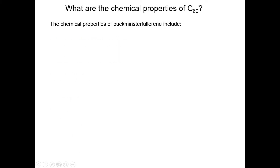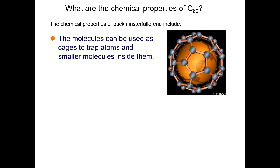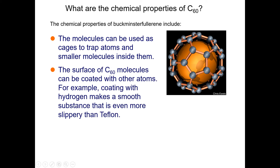The chemical properties of Buckminsterfullerene include that the molecules can be used as cages to trap atoms and smaller molecules inside them. Similarly, the surfaces of Carbon-60 molecules can be coated with other atoms.